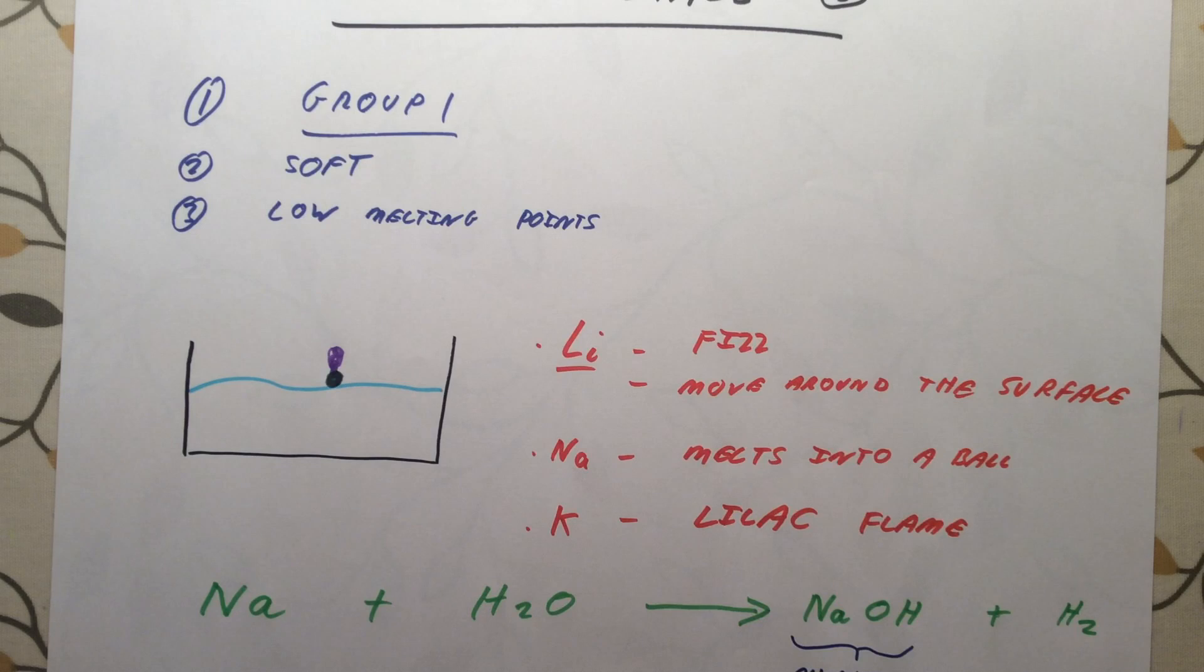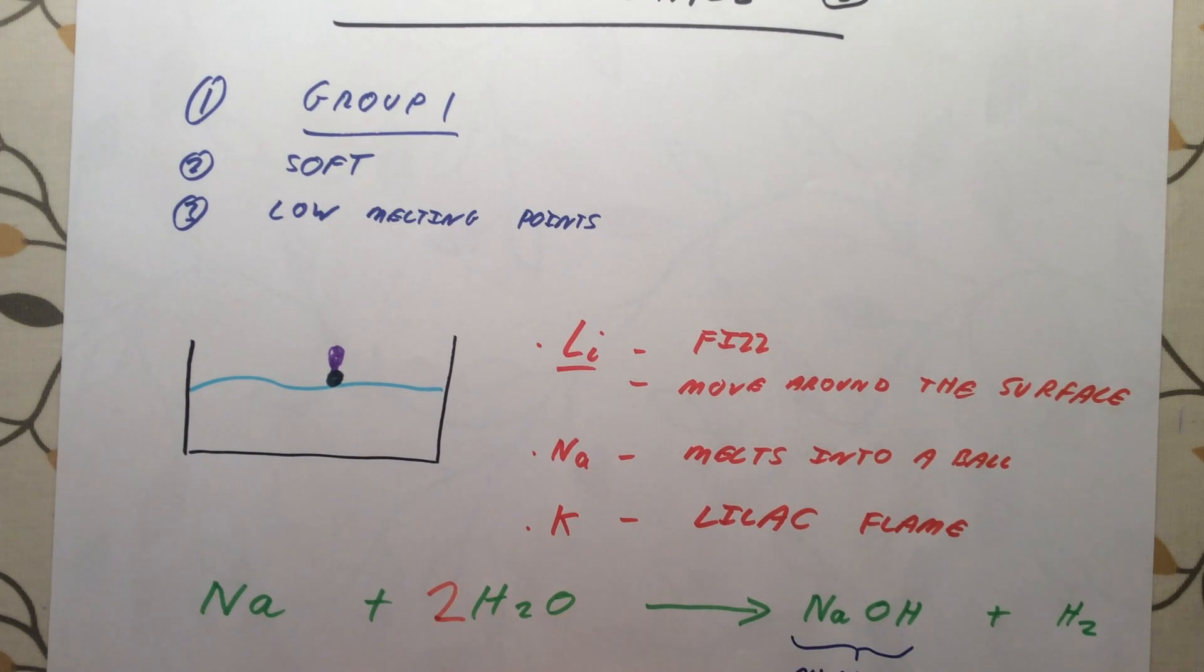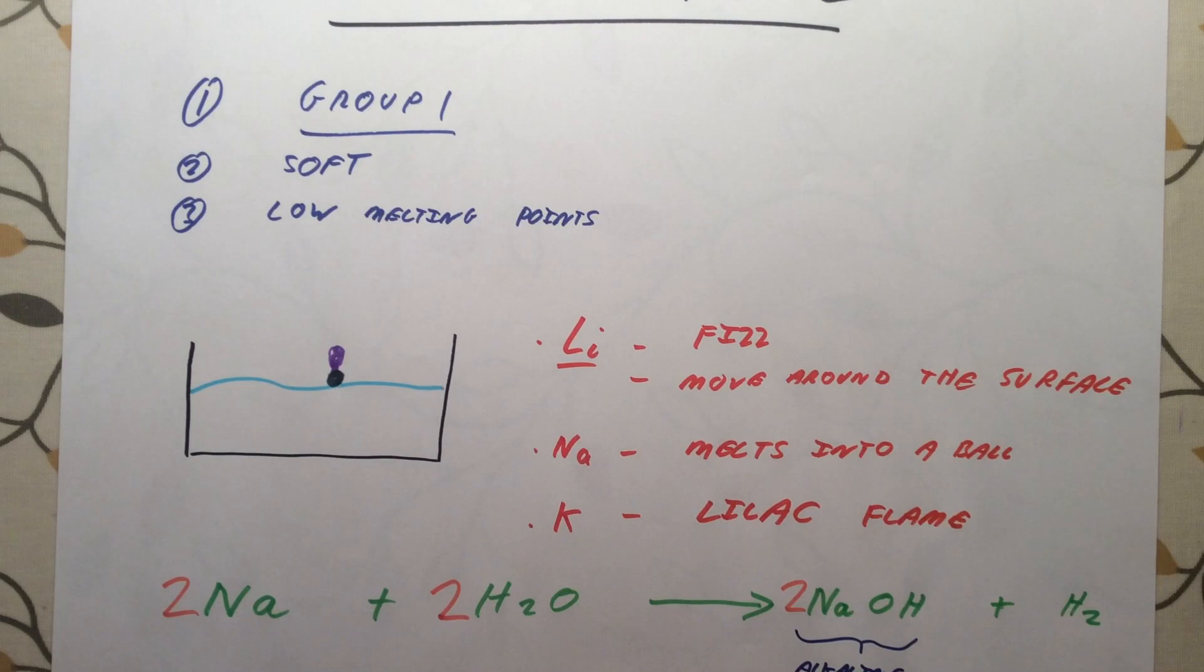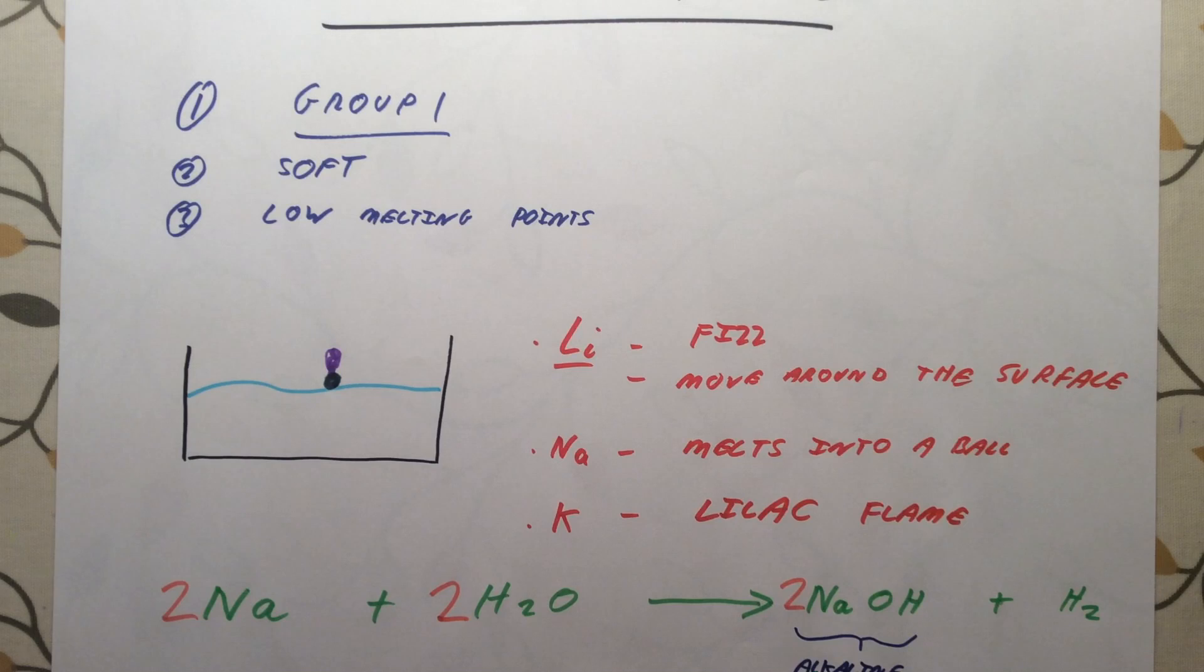We need to balance this equation. What have we got? We have got three hydrogens on this side and two here. Let's put a two there. We're therefore going to need a two here and a two there. So you could get asked about this equation. Key thing to remember is that you produce sodium hydroxide, NaOH, and hydrogen gas.